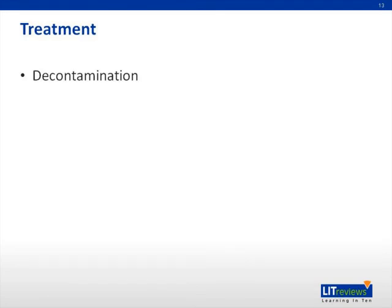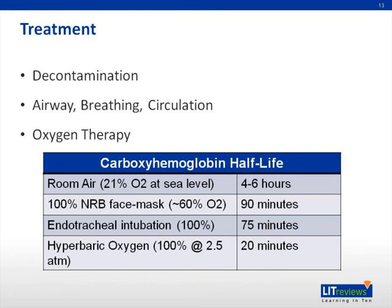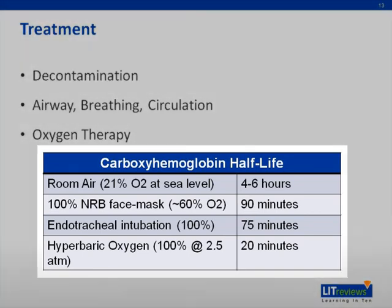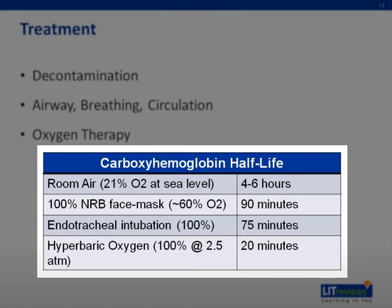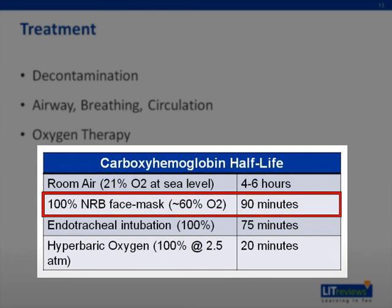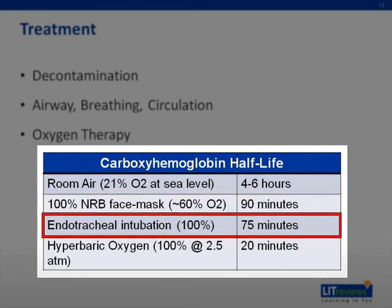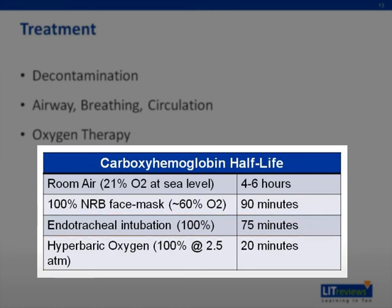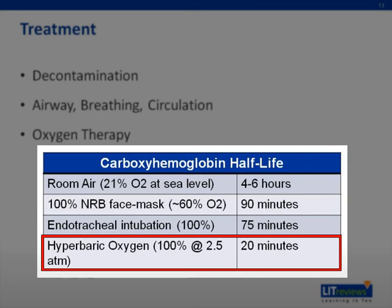The first step in the management of a carbon monoxide victim is removing them from the environment from which they were exposed. Next, basic life support principles such as airway, breathing, and circulation should be employed. The definitive therapy for carbon monoxide poisoning is oxygen. Please review the table below and appreciate that the half-life of carboxyhemoglobin is greatly affected by the FiO2 of oxygen that a victim is inhaling. If left to breathe room air at sea level, an FiO2 of 21%, it will take 4-6 hours for half of the carboxyhemoglobin to wash out. This can be reduced to 90 minutes with 100% oxygen by face mask, or 75 minutes by endotracheal intubation. Or, if you use hyperbaric oxygen, which is 100% FiO2 at 2.5 atmospheric pressures, the half-life can be reduced to 20 minutes.